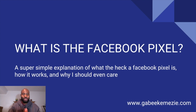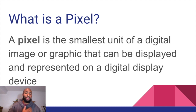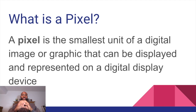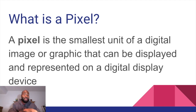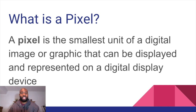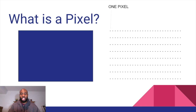So what is the Facebook pixel? This is a super simple explanation of what it is, how it works, and why you should care. First, let's dive into what a pixel actually is. A pixel is the smallest unit of a digital image or graphic that can be displayed on a digital display device. In layman's terms, a pixel is the smallest component of an image — think of it like atoms in matter. All images and pictures are boiled down to what are called pixels. So imagine this blue square is an image; if we pixelate it, it's made of a bunch of different pixels, and one of those tiny dots represents one pixel.